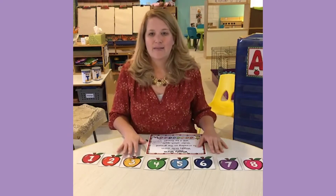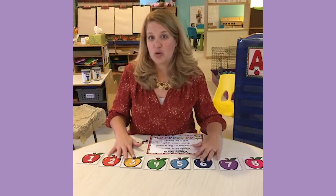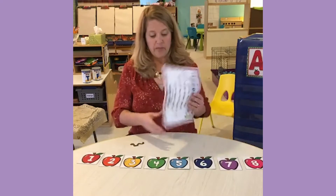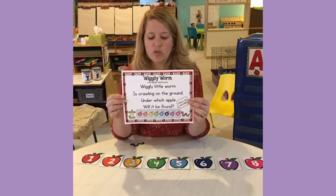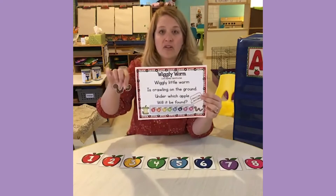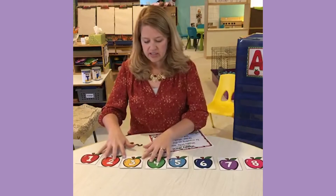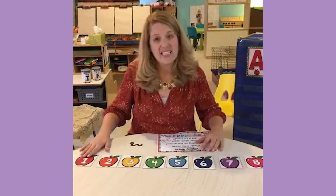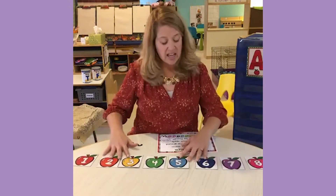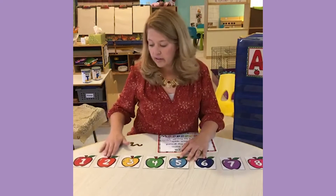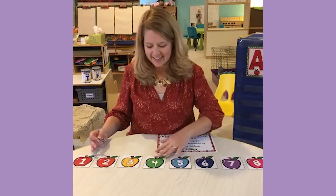One of our favorite circle time activities is a hiding game. We have lots of different versions where we hide things and ask students to close their eyes and figure out what we're doing. The one I'm going to share is the Wiggly Worm. It's a little poem I wrote — it goes: Wiggly Little Worm, it's crawling on the ground, under which apple will he be found? We have spread out here eight different apples and they're numbered one through eight. I'll introduce that to the students and have them count. We'll talk about how the eight apples are different colors — we've got red, orange — and it's in rainbow order.